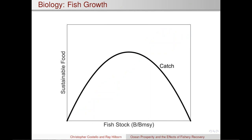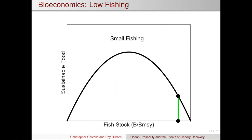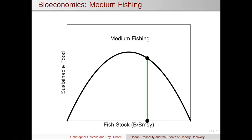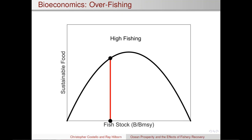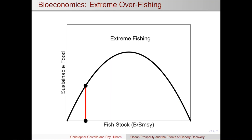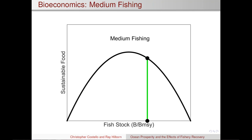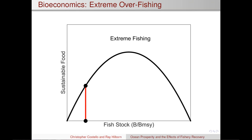This plateau has led many people to say we've reached the maximum capacity of the ocean, or perhaps we're well past it, and the only reason catches stay high is that we keep engaging in more and more effort. So we started with a theoretical analysis. This is a schematic of what biology says: the fish stock is on the x-axis, and the sustained food you could get is on the y-axis. If you don't fish at all, you have a very large stock but no food for people. If you fish harder, you drive the stock down; if you fish even harder, food stays the same or goes down, and you've severely depleted the stock.